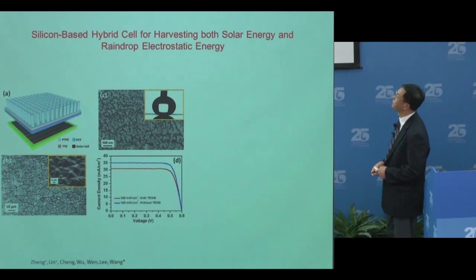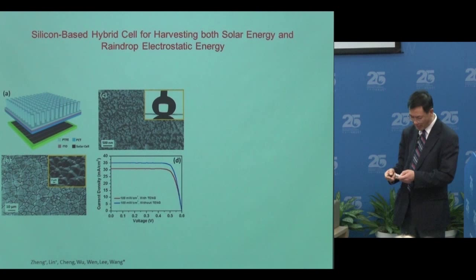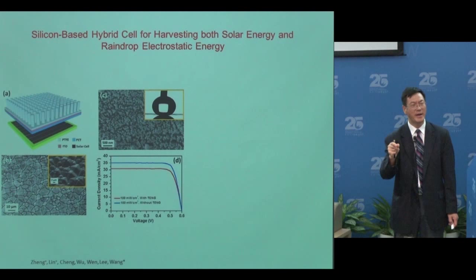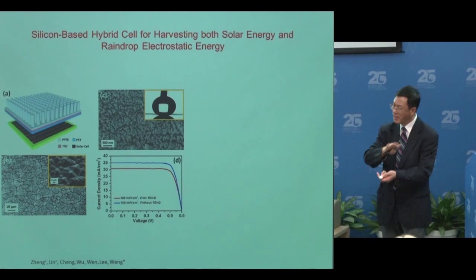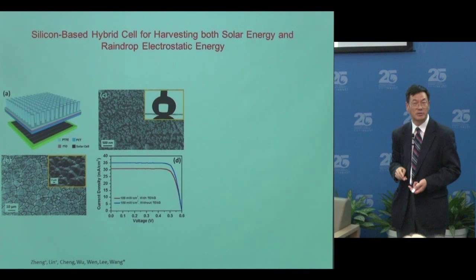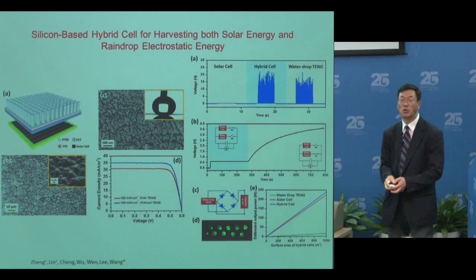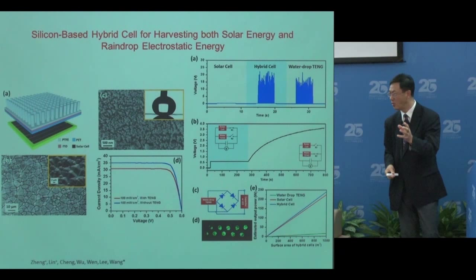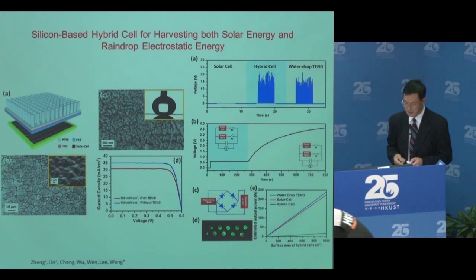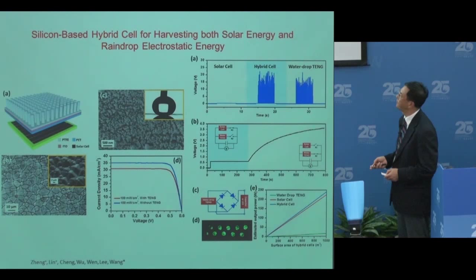In Hong Kong there's a lot of rain. Can we make a device that harvests both raindrop energy and solar energy simultaneously? Any solar cell has a surface protection layer — we replace that layer with our triboelectric generator, so the device converts solar energy and raindrop energy simultaneously into electricity. We demonstrated that, showing the possibility of using whatever energy is available whenever it's available. This is a new way to look at hybrid cells.